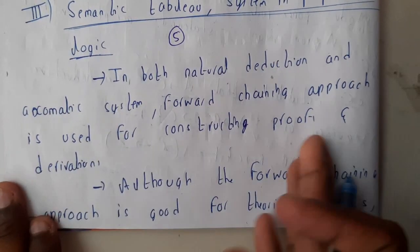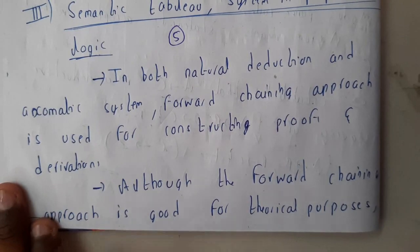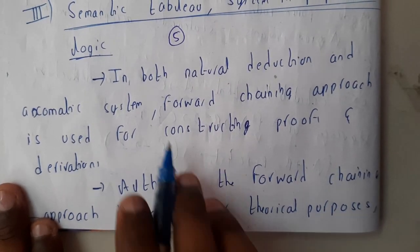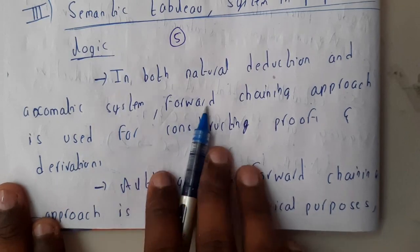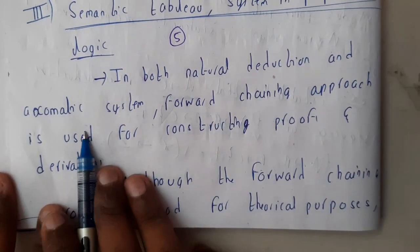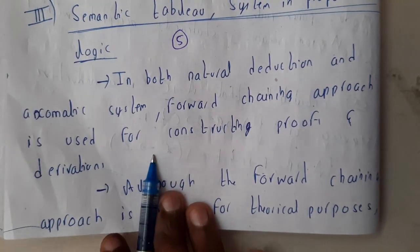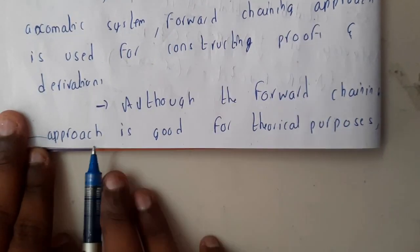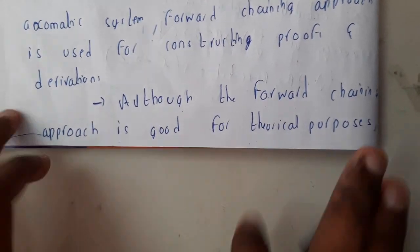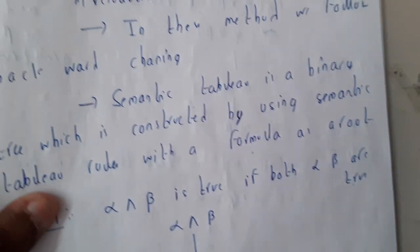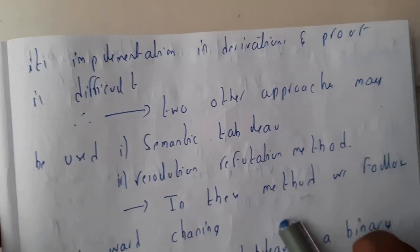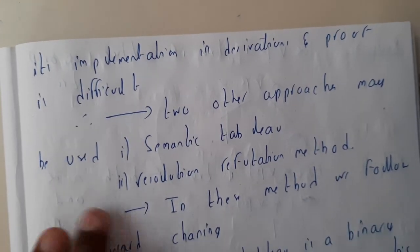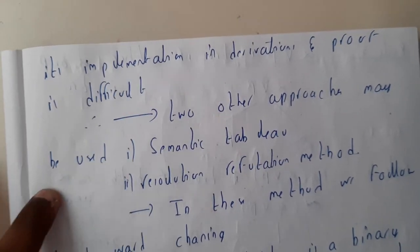Here in this method we will be using backward chaining, so that's the reason why this is completely different. In both natural deduction and axiomatic system, forward chaining approach is used for constructing the proof and derivation. Although the forward chaining approach is good for theoretical purposes, its implementation in derivation and proof is difficult.